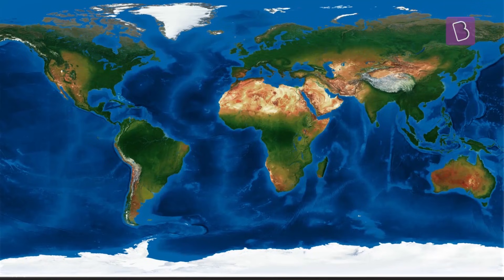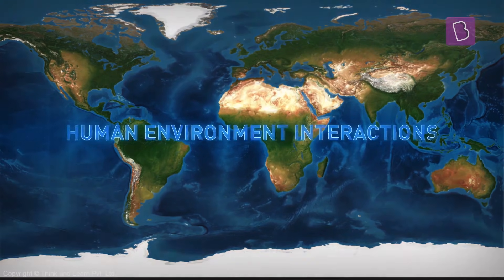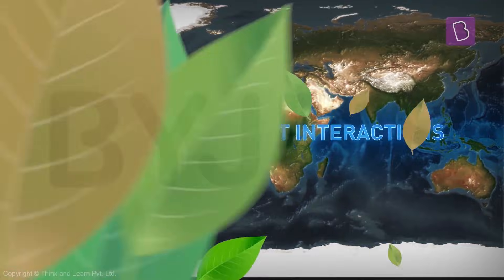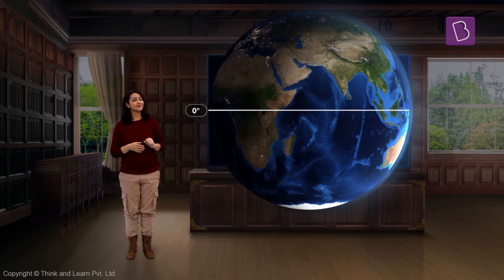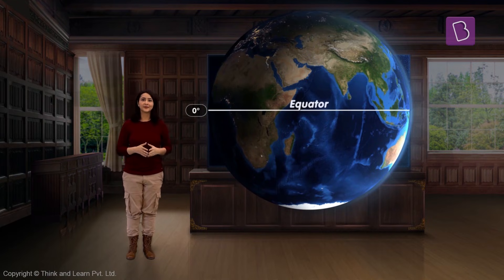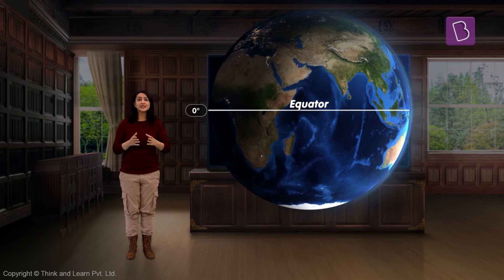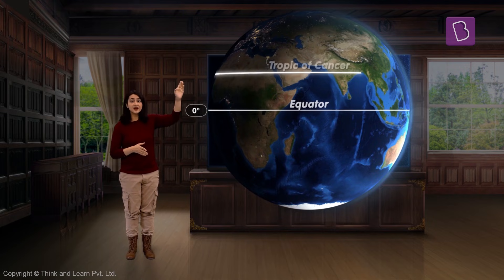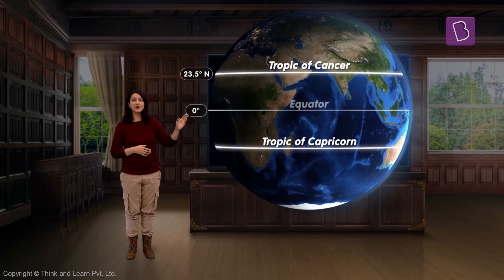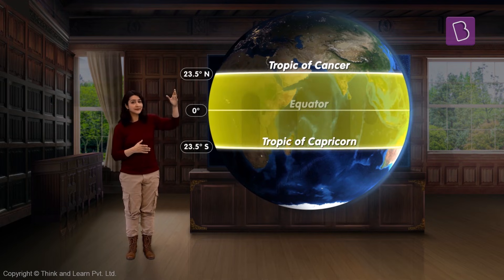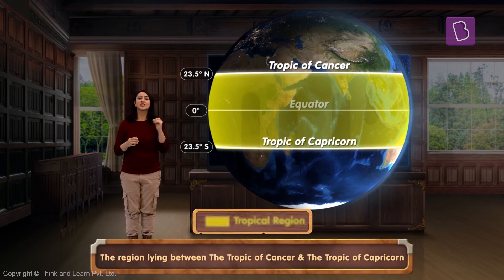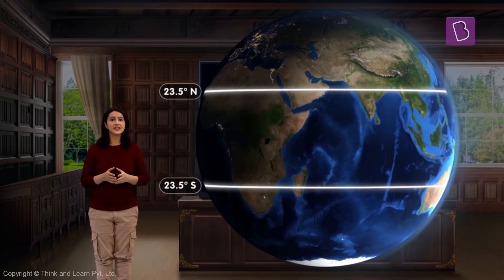In order to understand these human-environment interactions, let's see which part of the world we are about to explore. The zero degrees latitude is the equator. There are two other important latitudes: the Tropic of Cancer at 23.5 degrees north and the Tropic of Capricorn at 23.5 degrees south.